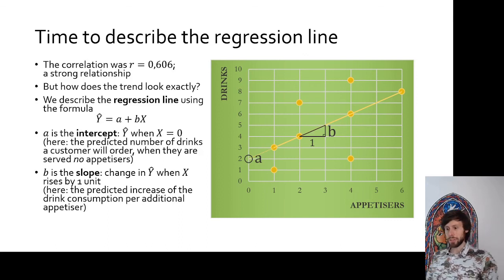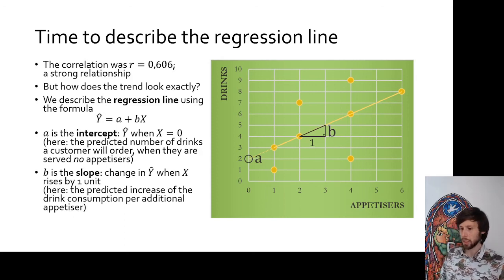Therefore, B expresses the change in Y hat, change in the predicted number of drinks, the expected number of drinks, whenever X, the number of appetizers rises by one unit. That's the idea.